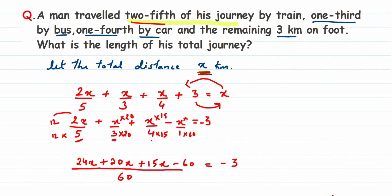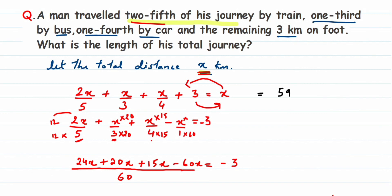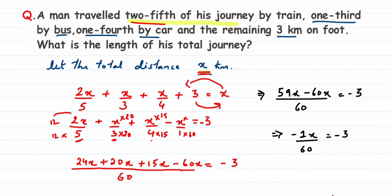When transposing 3 to the other side, it becomes minus 3. Now simplifying the numerator: 24 + 20 = 44, and 44 + 15 = 59. So we get 59x − 60x upon 60 = −3, which gives us −x/60 = −3.